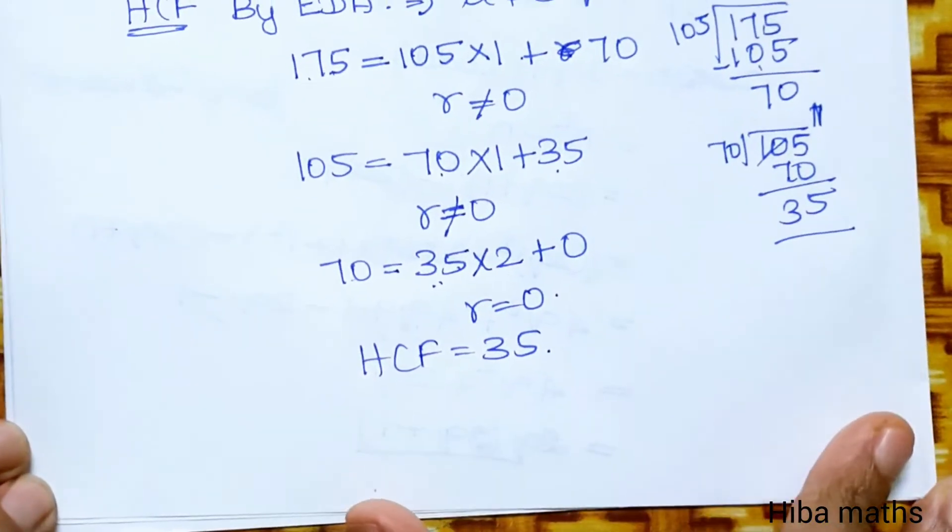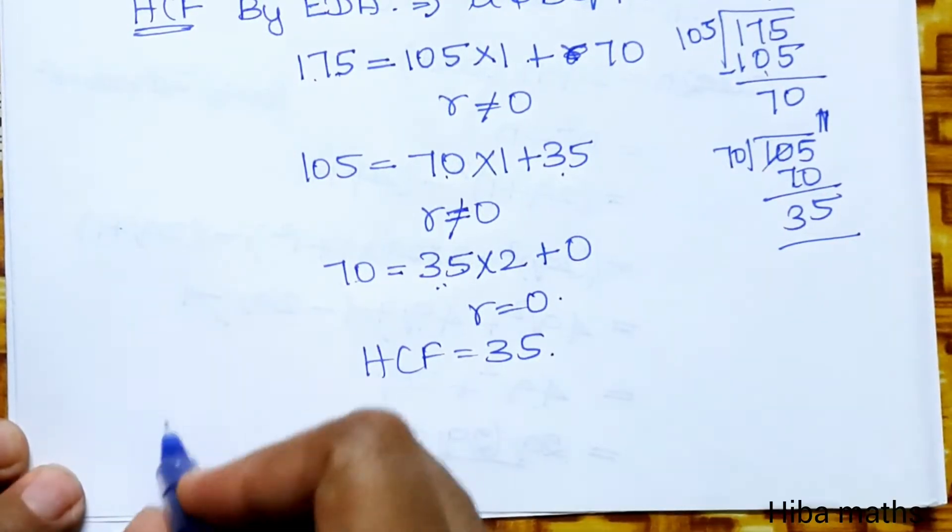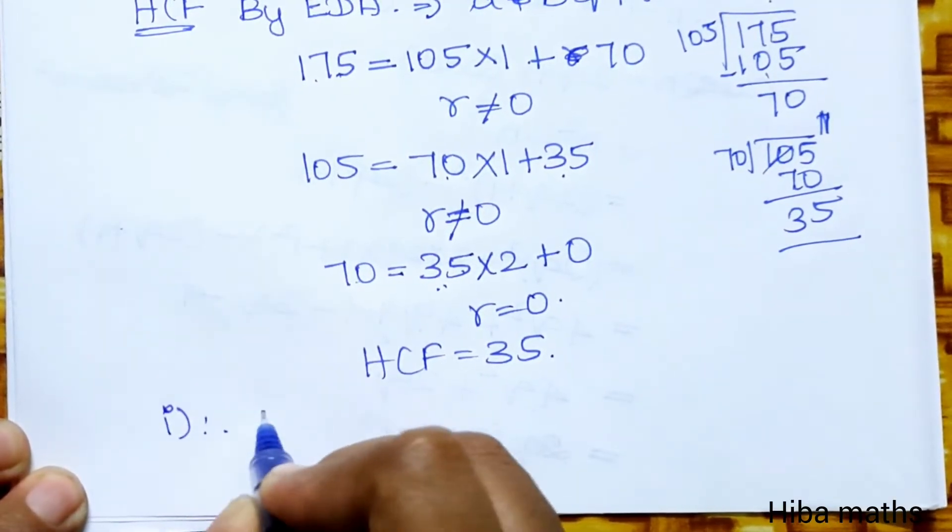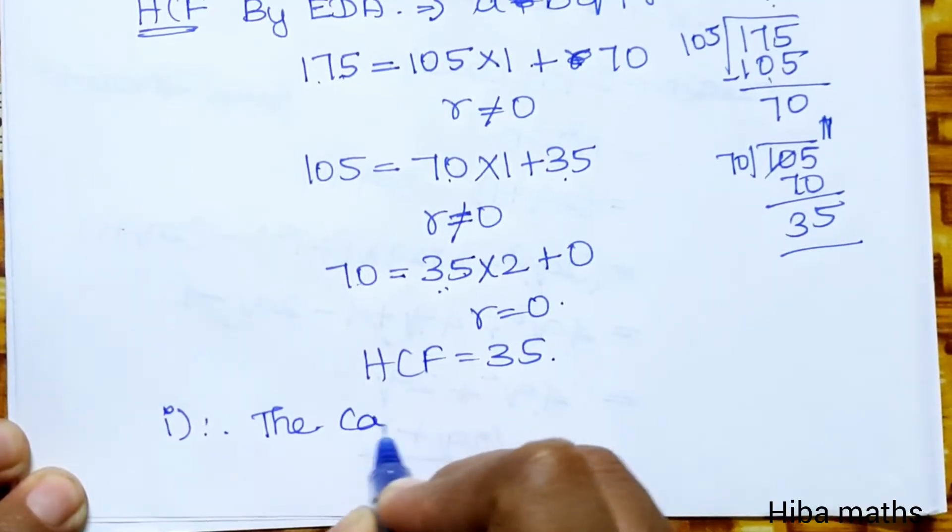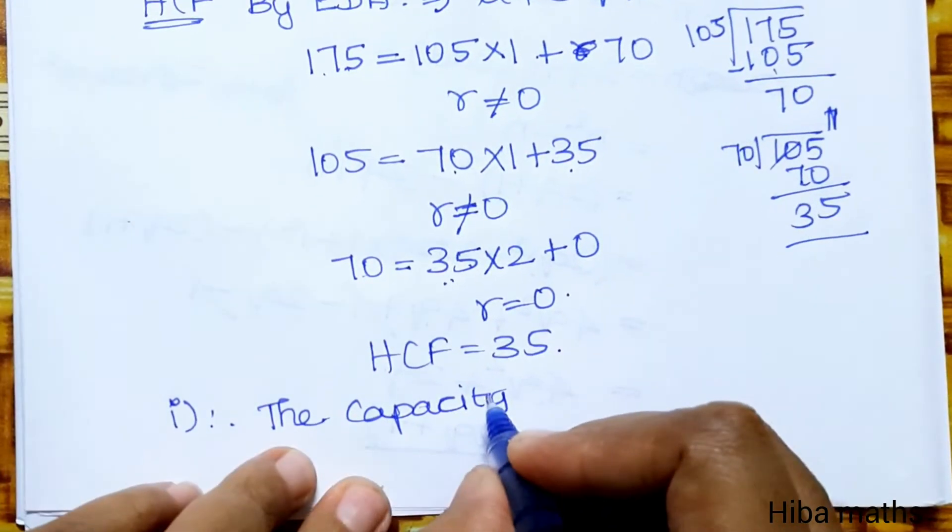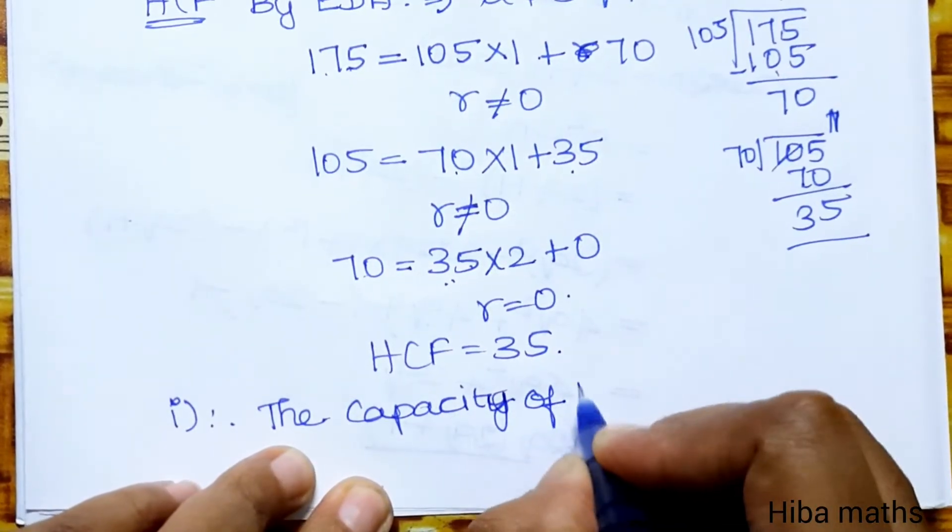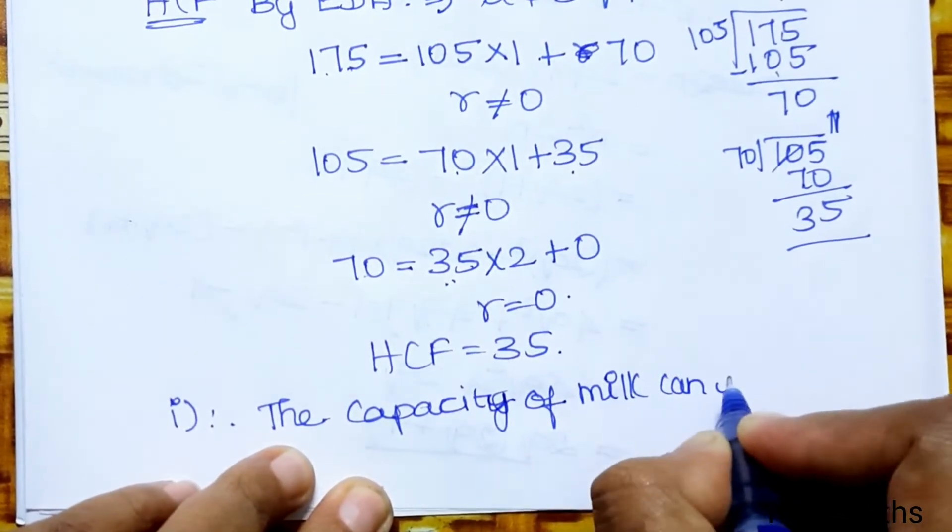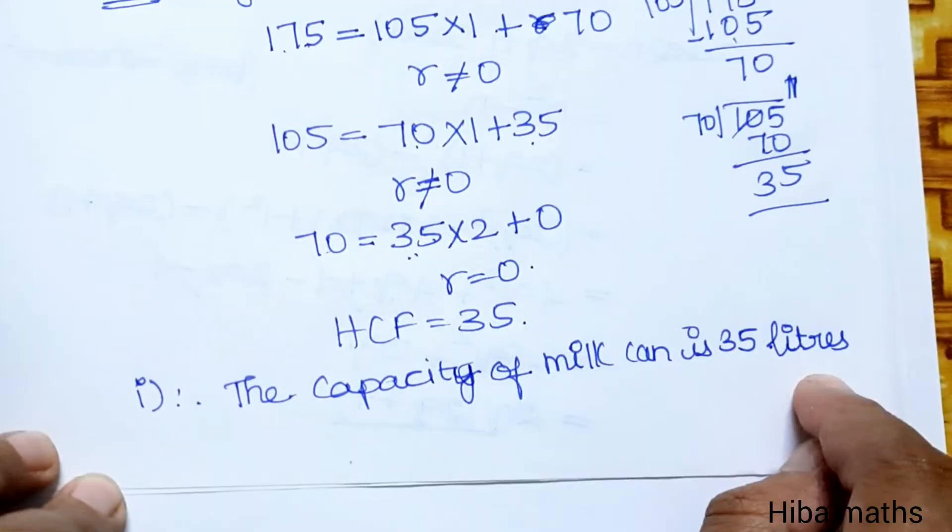The capacity is 35. Therefore, the capacity of the milk can is 35 liters.